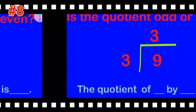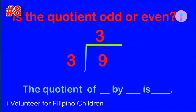Kindly repeat. Item number eight: is the quotient odd or even? The quotient of nine by three is odd.